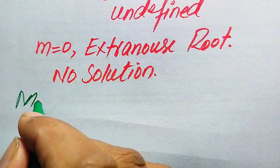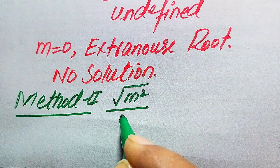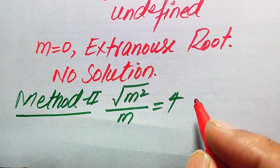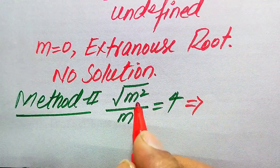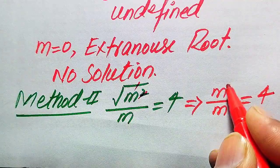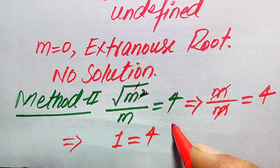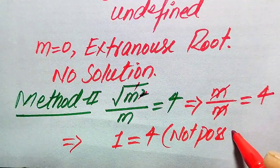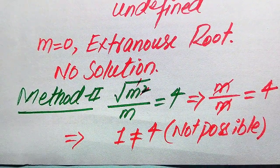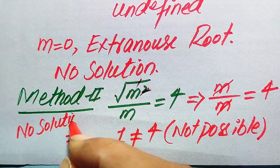In the second method, the given equation is √(m²) / m = 4. This is a quick method. The square root of m² equals m, so the square root and square cancel, giving us m divided by m equals 4. Then m cancels with m, giving us 1 = 4. Since 1 equals 4 is not a possible case — these are not equal — there is no value of m that satisfies the equation. So this question has no solution.